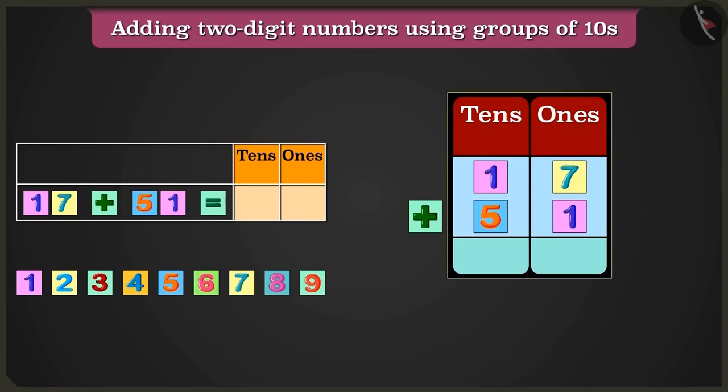First of all, we will add the numbers in the box of ones. So, 7 ones plus 1 ones will equal 8 ones. So, we will write 8 in the ones place.